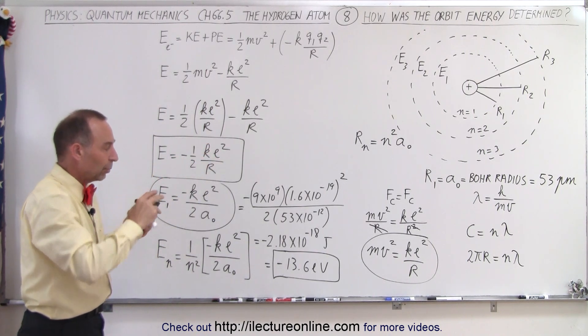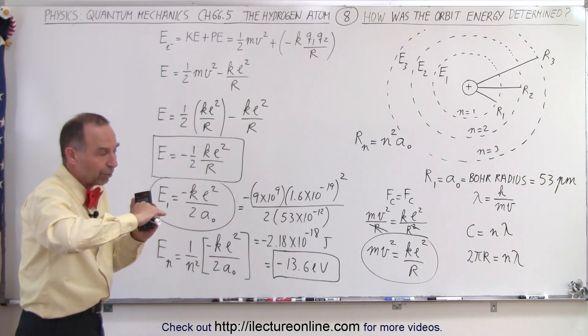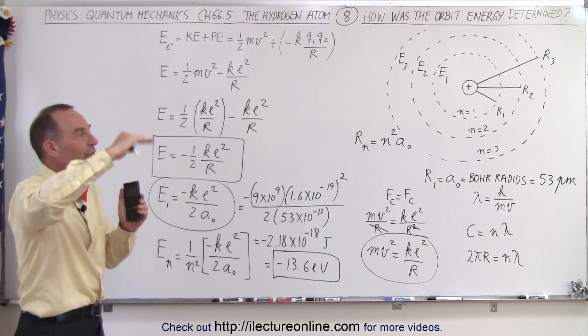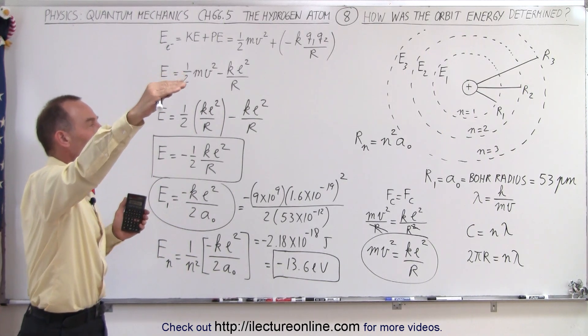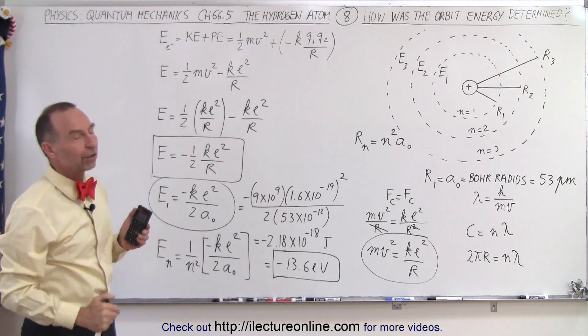But of course the actual energy increases until eventually you can free the electron from the orbit as n becomes a very large number.